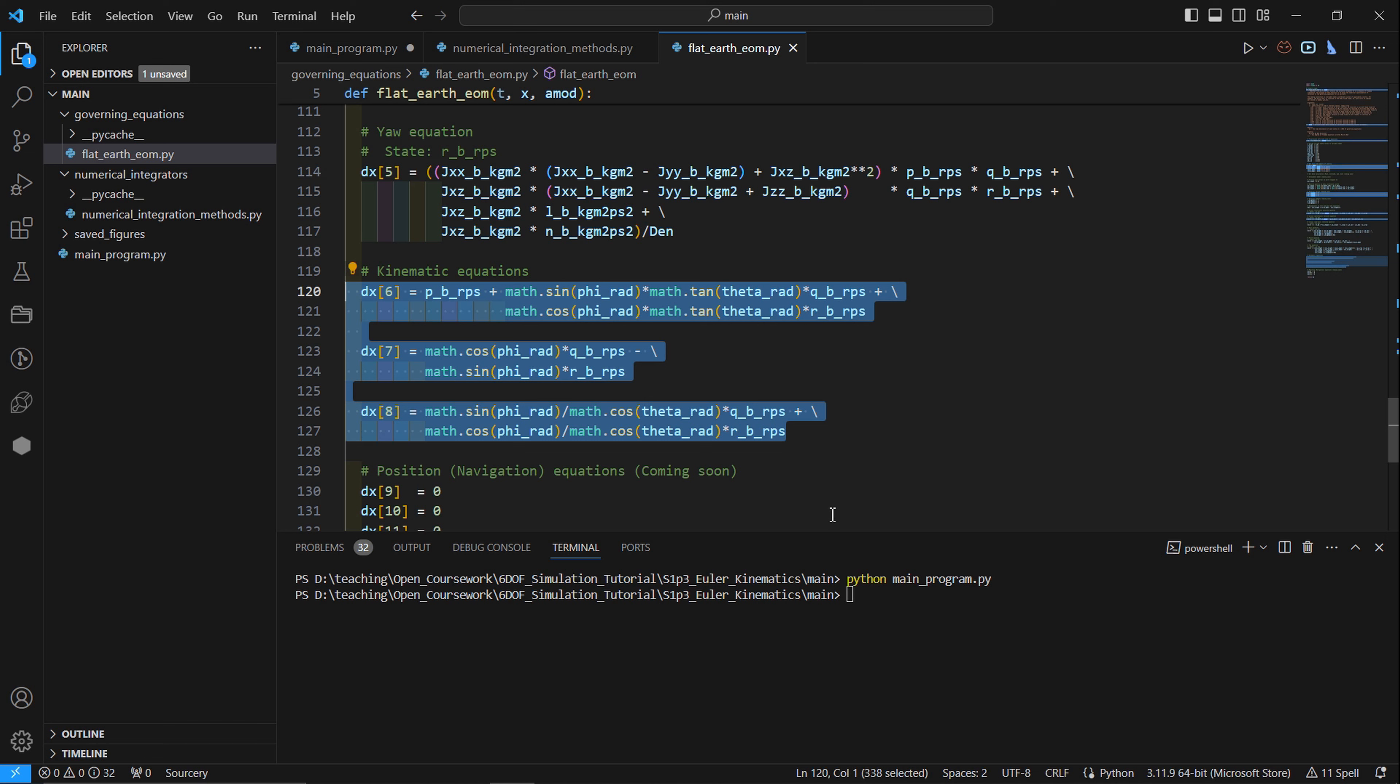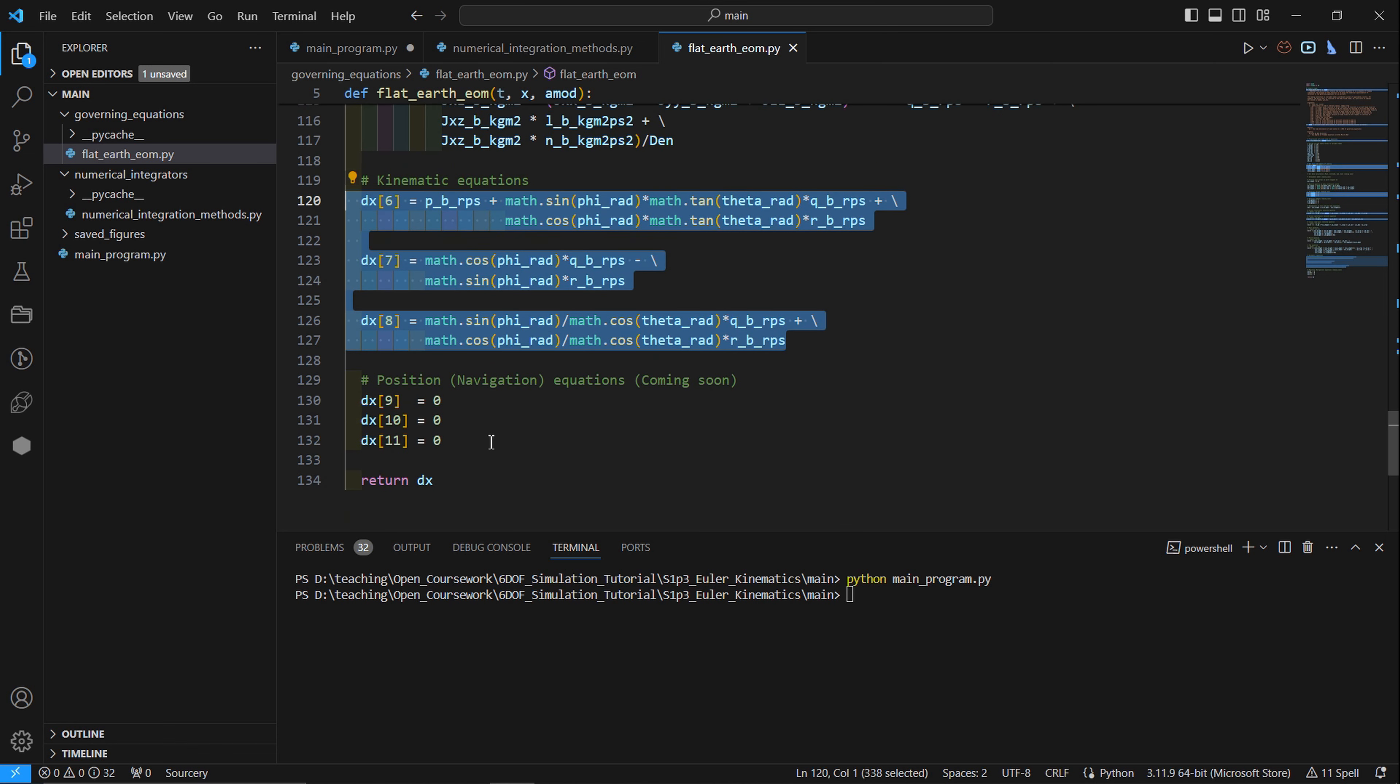But what is new are the Euler kinematic equations on lines 120 through 127. So we can compare these equations to the Euler kinematics that we more or less derived in the lesson. And finally, our position equations, which are just placeholders, as mentioned before. And these will be updated in the next lesson.